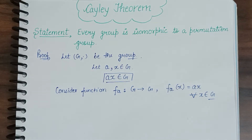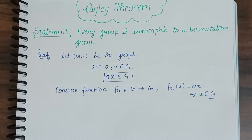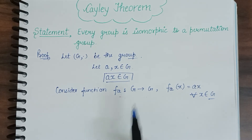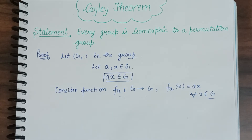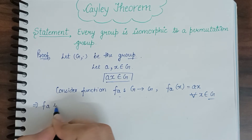Now, we have to show this function F_A is a permutation. For that, you must know what permutation is. In the first lecture, I have told you what permutation is. If you have not done that lecture, I will provide a link in the description. In short, a function that is one-one and onto is known as a permutation. So we will prove this function is one-one and onto. Firstly, we prove F_A is one-one.